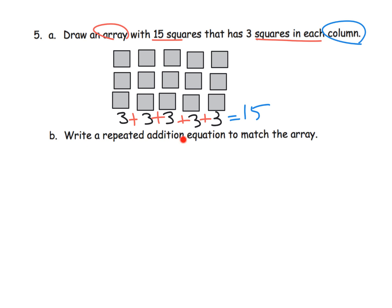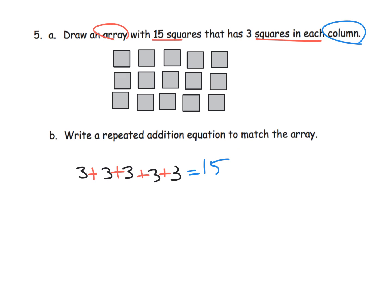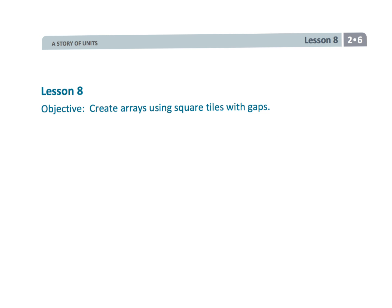It says 'write a repeated addition equation to match the array.' Three plus three plus three plus three plus three is one repeated addition equation we could use. But other students might notice we have five going across each row — five in this row, five in this row, and five in this row — so those students might prefer five plus five plus five equaling 15, and that would be perfectly fine as well. That wraps up second grade module 6 lesson 8.